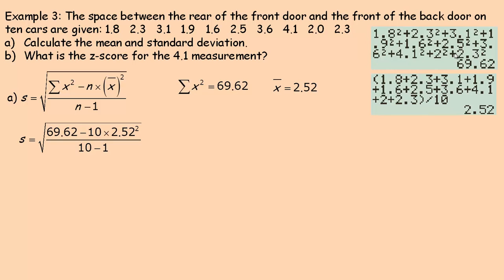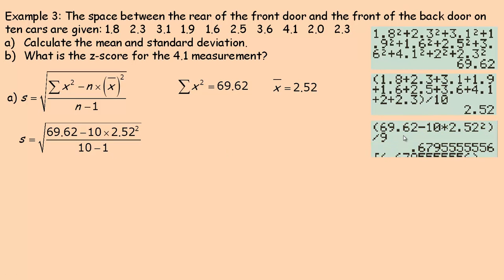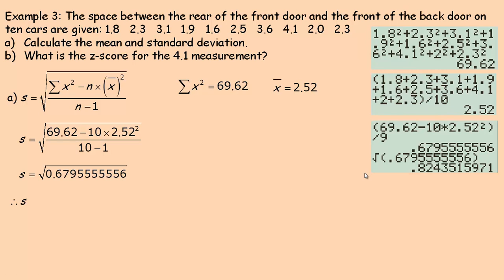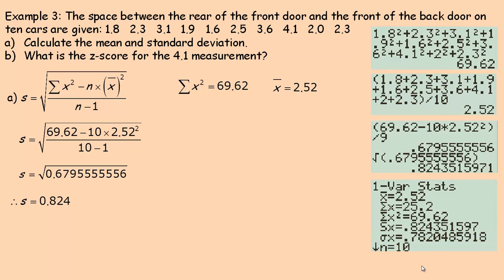In the formula, the 69.62 goes here and n is 10. The mean of 2.52 is going to be squared, and because it's a sample we divide by 10 minus 1, or 9. The number underneath the root is going to be 0.6795 repeating, and then we take the square root of that to get 0.824. So that is the standard deviation. The graphing calculator confirms the same thing: sum of squares is 69.62, mean is 2.52, and the sample standard deviation is 0.824.